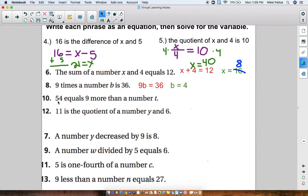Number 10. 54 equals 9 more than a number T. More than is addition. So our equation is 54 equals 9 plus T. Now, since this is addition, we do subtraction to figure out what T equals. T equals 45.